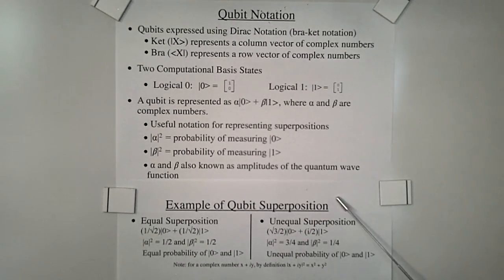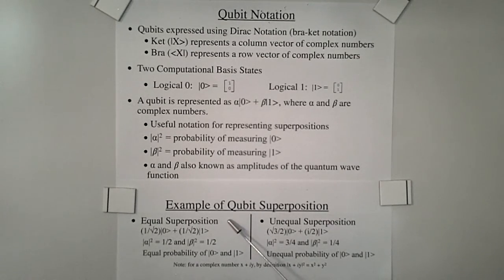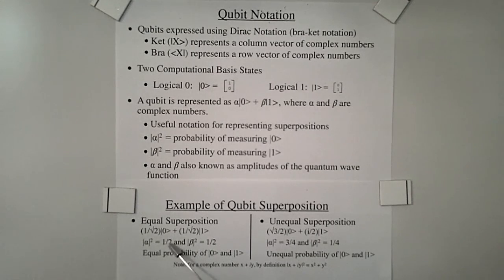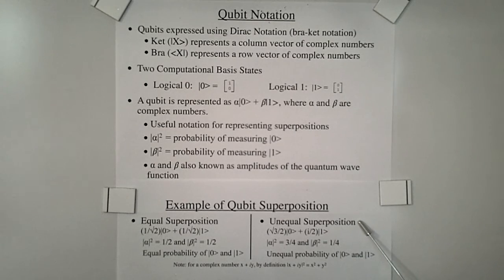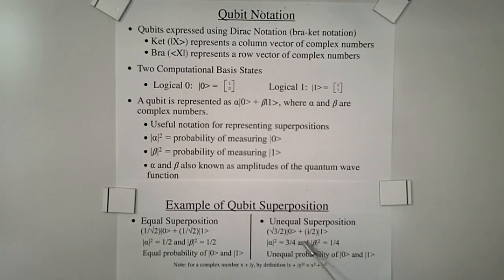Here is an example of a qubit superposition. A qubit could be an equal superposition. In this example, the absolute value of alpha squared equals one-half, and the absolute value of beta squared equals one-half, so there is an equal probability of ket 0 and ket 1. A qubit could also be an unequal superposition. In this example, the absolute value of alpha squared is three-fourths, and the absolute value of beta squared is one-fourth, so there is an unequal probability of ket 0 and ket 1.